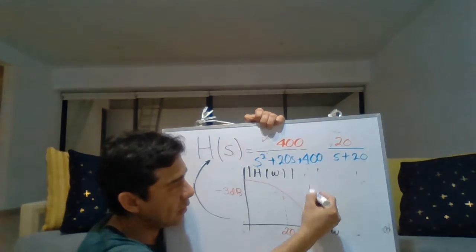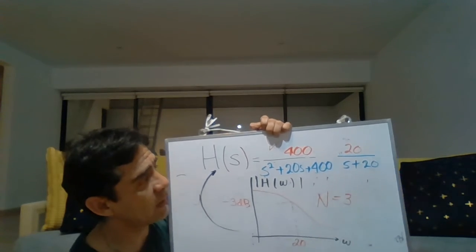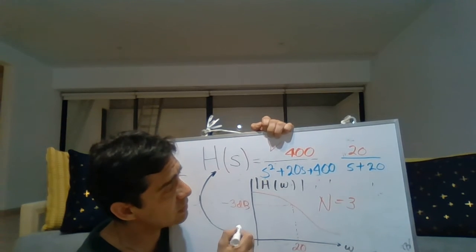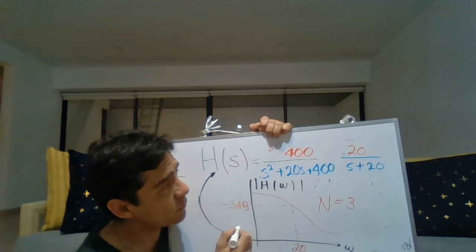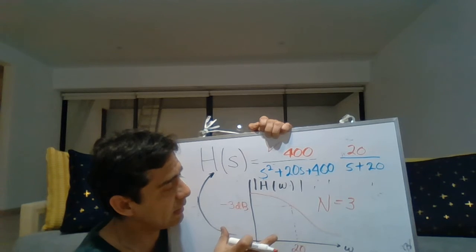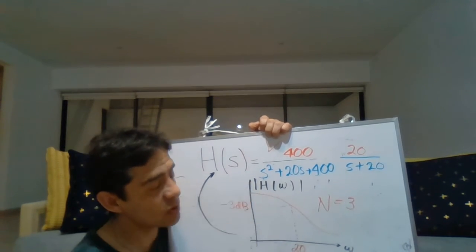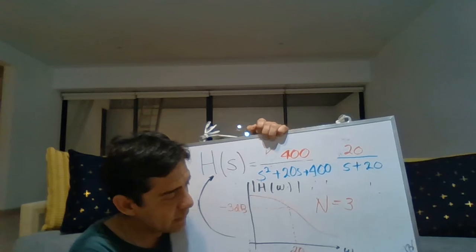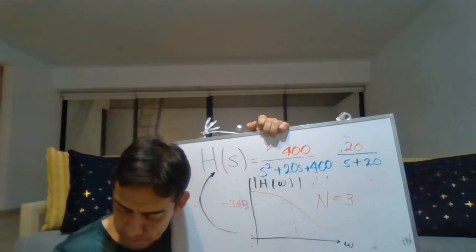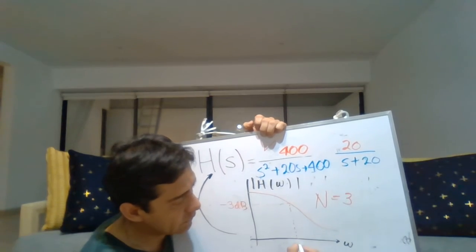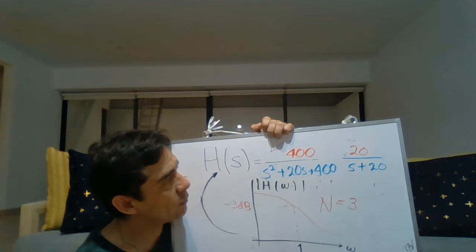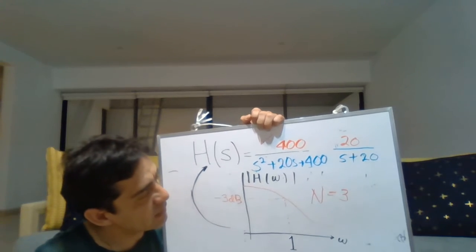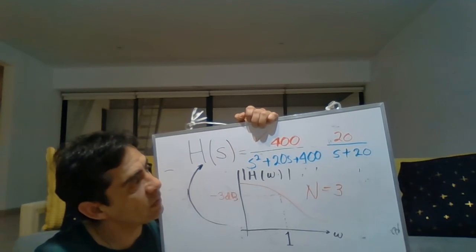The order is third order. If we are given the expression and the magnitude response plot, and we have to specify if the figure represents the expression, the answer is yes. But if instead of having 20 as the cutoff frequency we have just 1, the expression does not represent that magnitude, because that magnitude represents the frequency-normalized version of the transfer function.